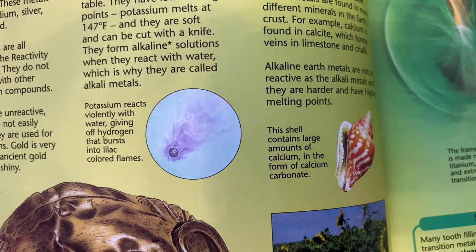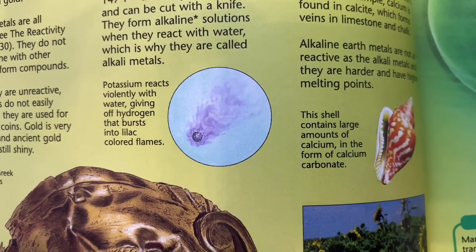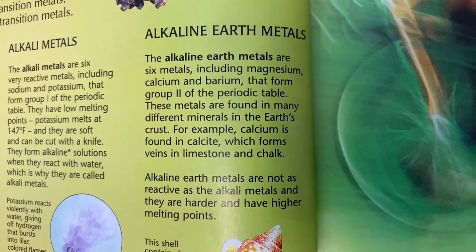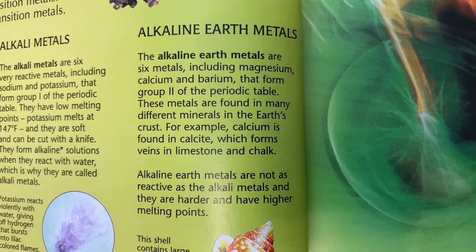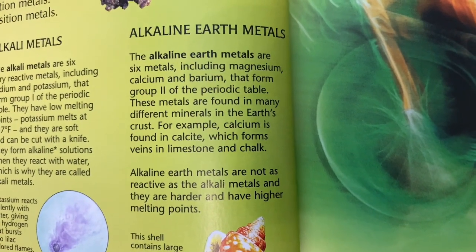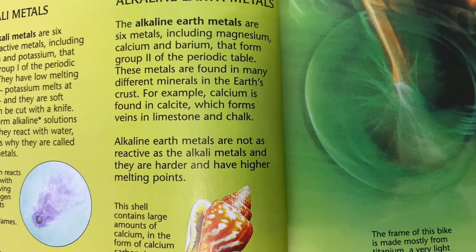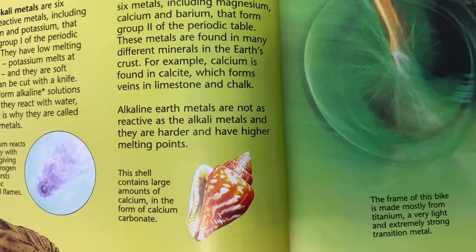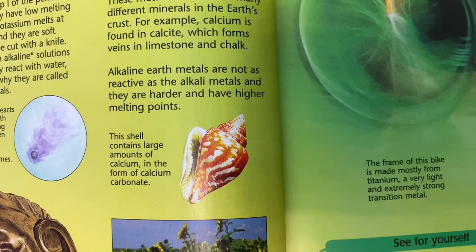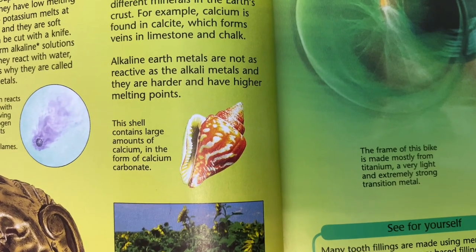Potassium reacts violently with water, giving off hydrogen that bursts into lilac-colored flames. The alkaline earth metals are six metals, including magnesium, calcium, and barium, that form Group 2 of the periodic table. These metals are found in many different minerals around the earth's crust — for example, calcium is found in calcite, which forms veins in limestone and chalk. Alkaline earth metals are not as reactive as the alkali metals, and they are harder and have higher melting points.